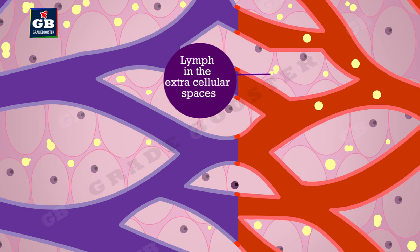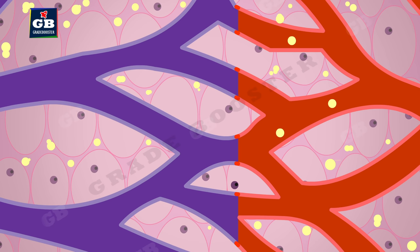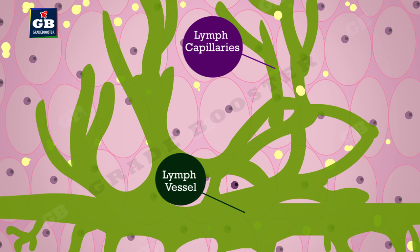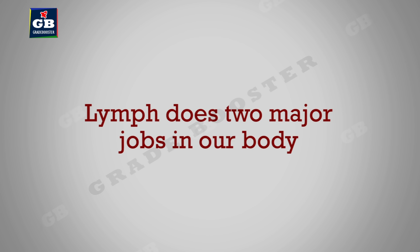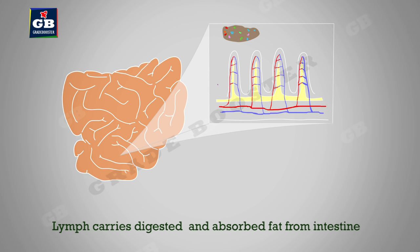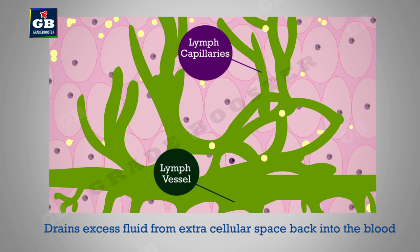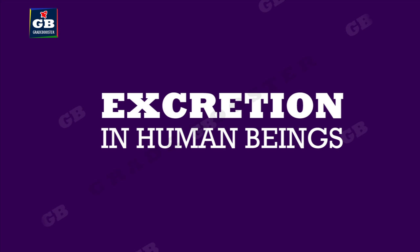Lymph is a colorless fluid similar to plasma of blood. It is formed by plasma escaped from the capillaries into the intercellular spaces. This fluid enters lymphatic capillaries, joins lymph vessels, and finally opens into large veins. Lymph does two major jobs: one — it carries digested and absorbed fat from the intestine; and two — it drains excess fluid from extracellular space back into the blood.